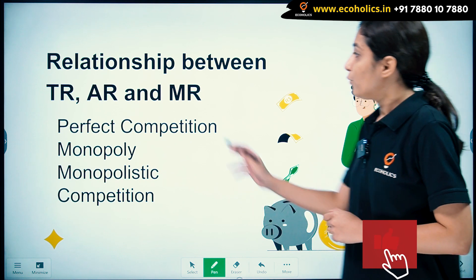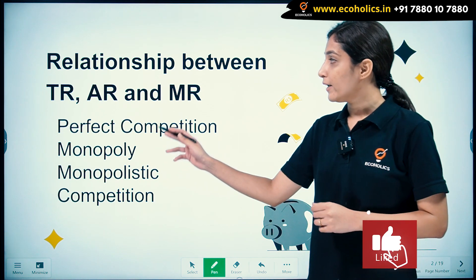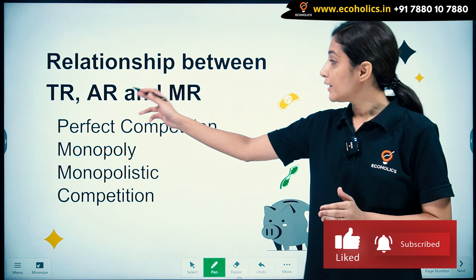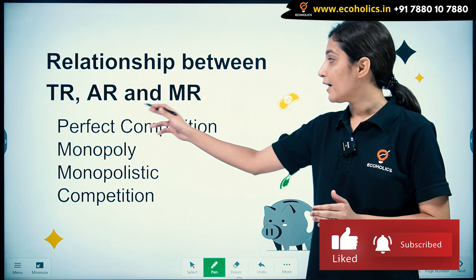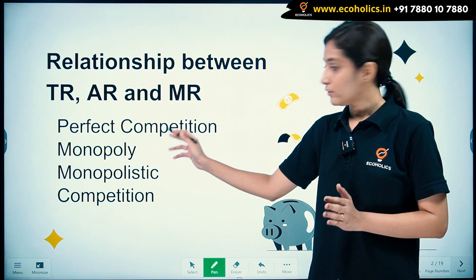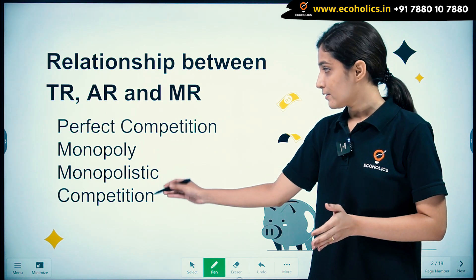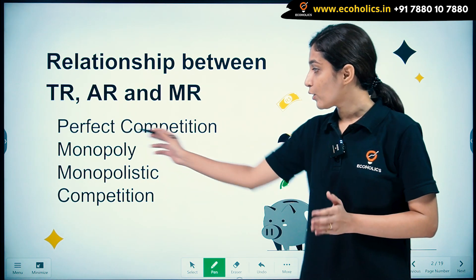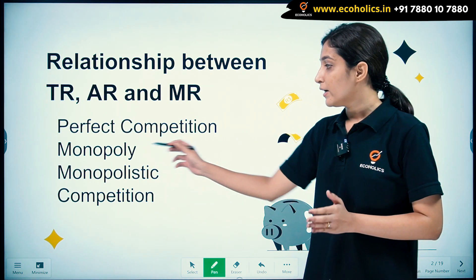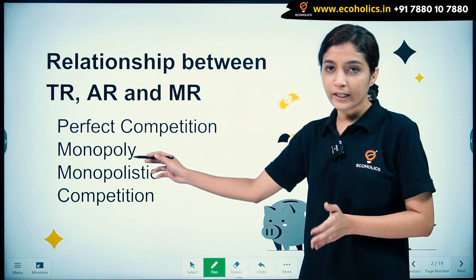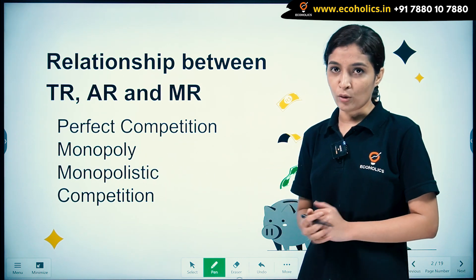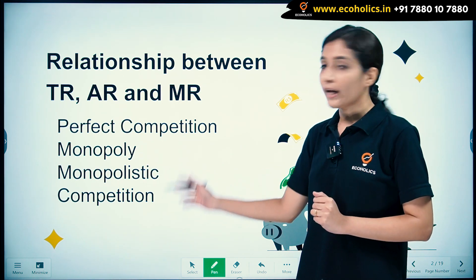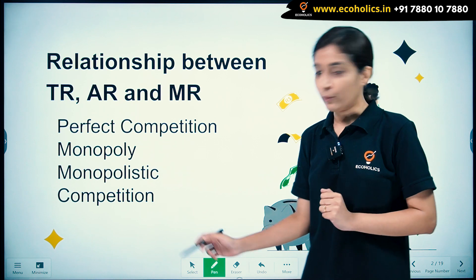Now, we are going to find the relationship between TR, AR, and MR in three markets: in case of perfect competition, in monopoly, and under monopolistic competition. So, let's look at them one by one.